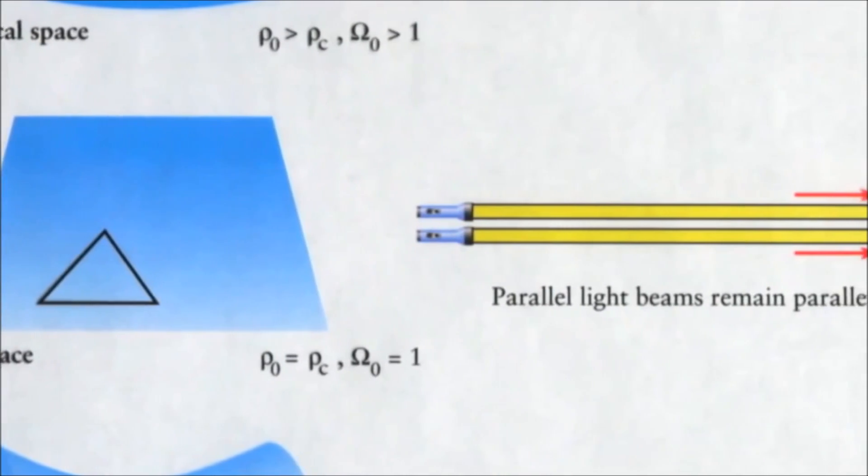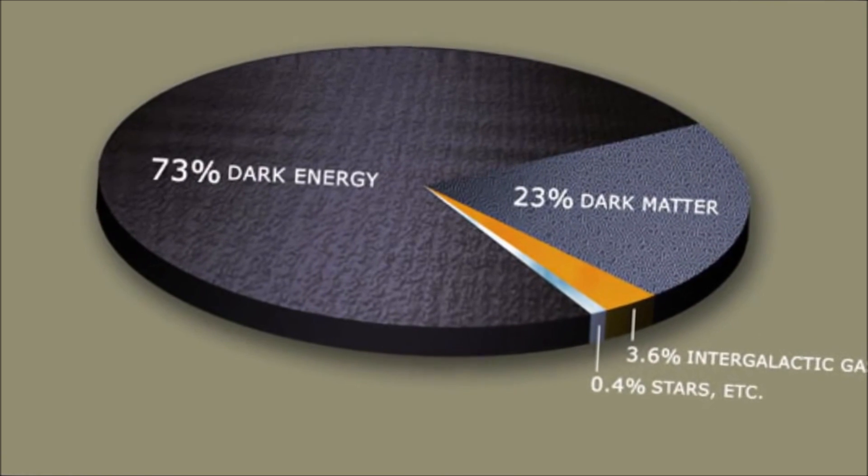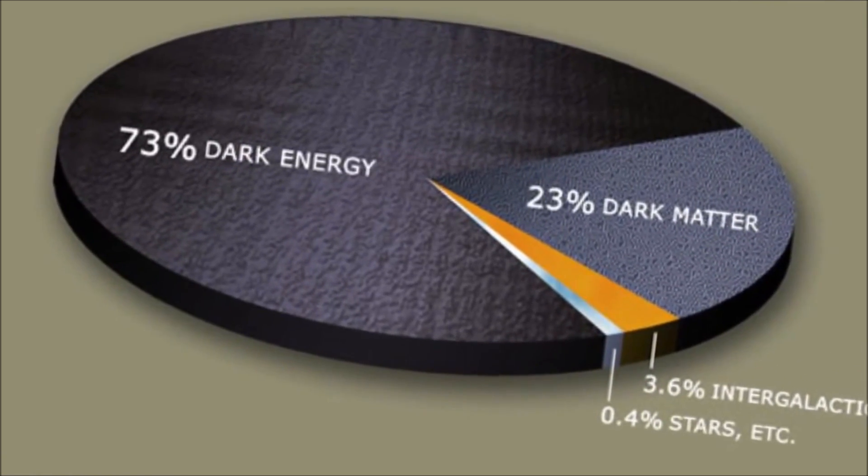Our universe, contrary to what you said in your video, is flat, and using the Friedman equations, we can determine its primary constituent. We live in a dark energy dominated universe.